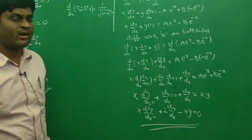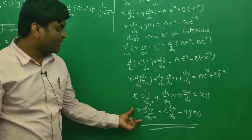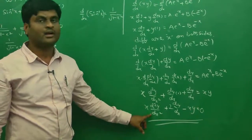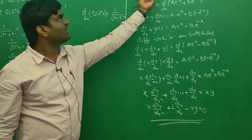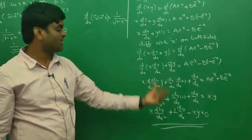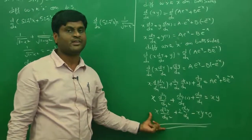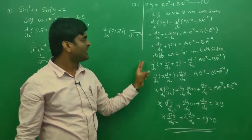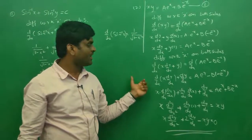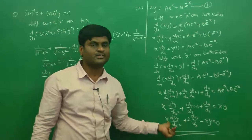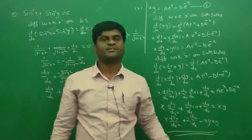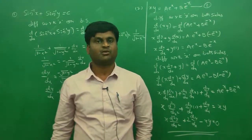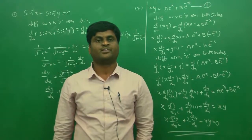This is the required differential equation because there is no arbitrary constant remaining. The order is 2, which matches the two arbitrary constants in the original family of curves. We differentiated two times and eliminated both arbitrary constants. This is the standard procedure for forming the differential equation of a family of curves with n arbitrary constants.